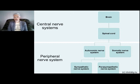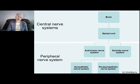This picture shows the classifications of the nervous system. The central nervous system is the brain and spinal cord. The peripheral nervous system consists of the autonomic nervous system and the somatic nervous system. The autonomic nervous system can be split into sympathetic and parasympathetic components.